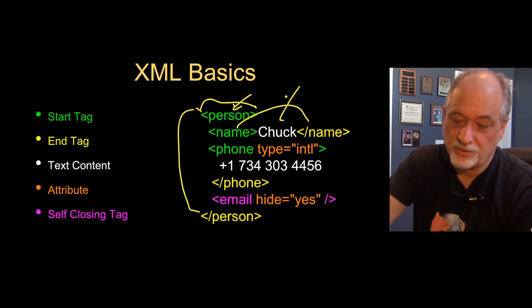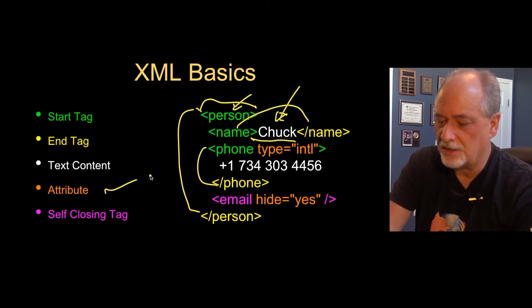Then there is the actual textual content, and that is the material between the tags. Here's a phone and slash phone, and we have this thing called the attribute. Key equals value. The key doesn't have double quotes, the value always has double quotes. This is like href equals on an anchor tag.